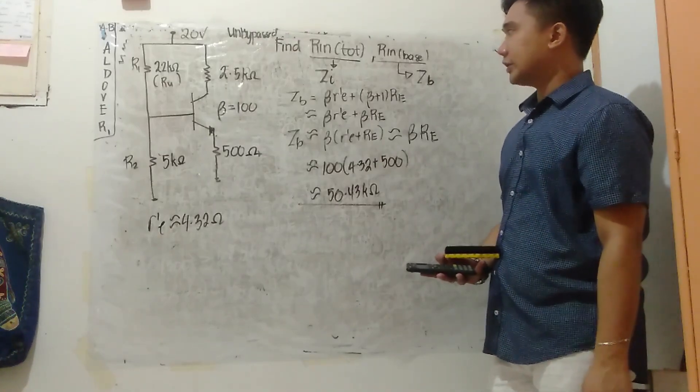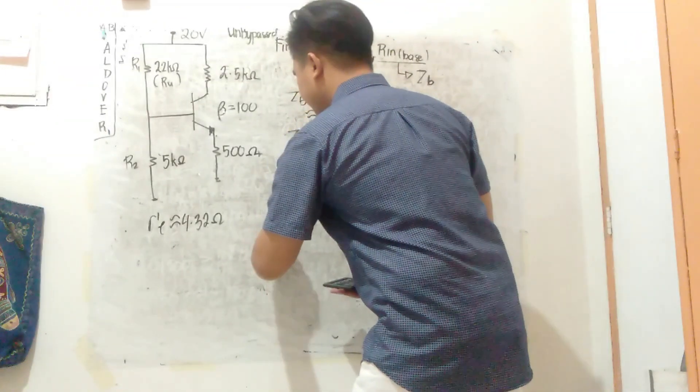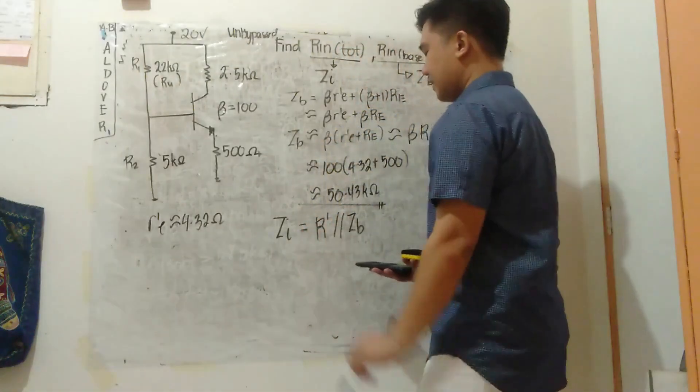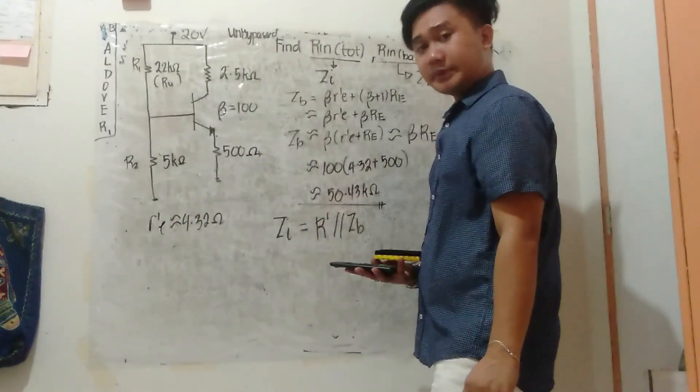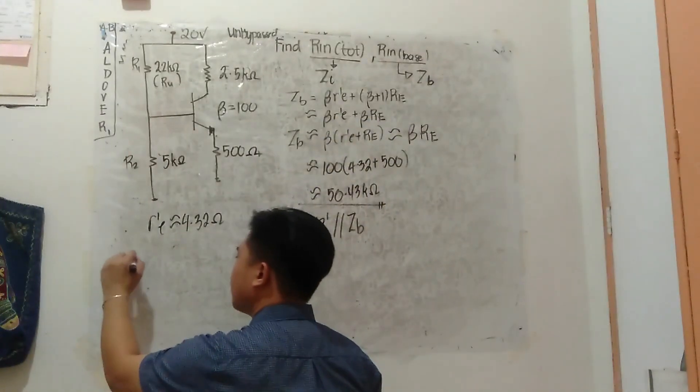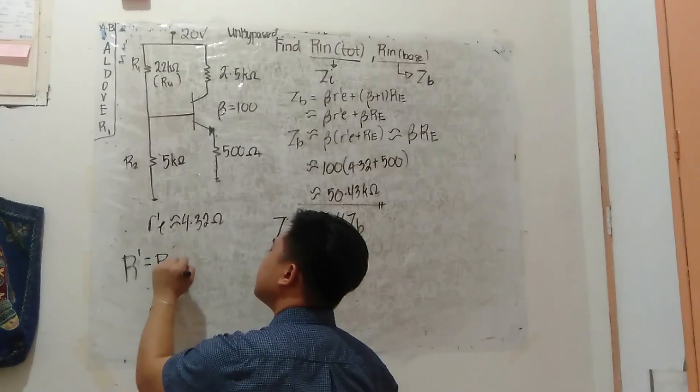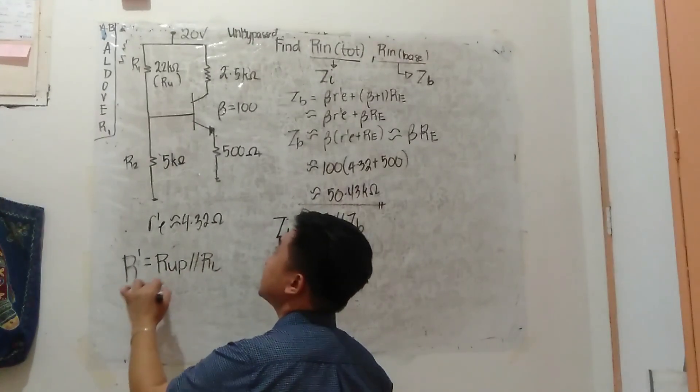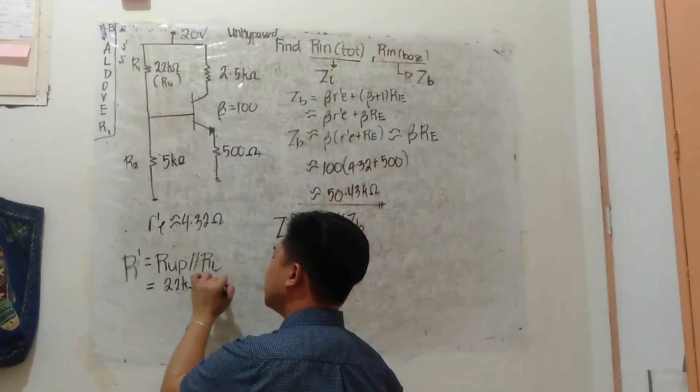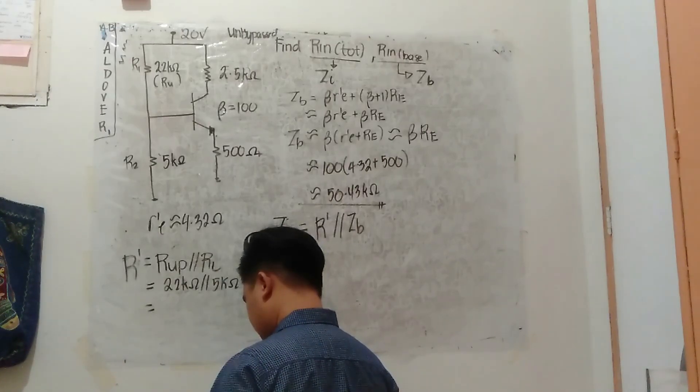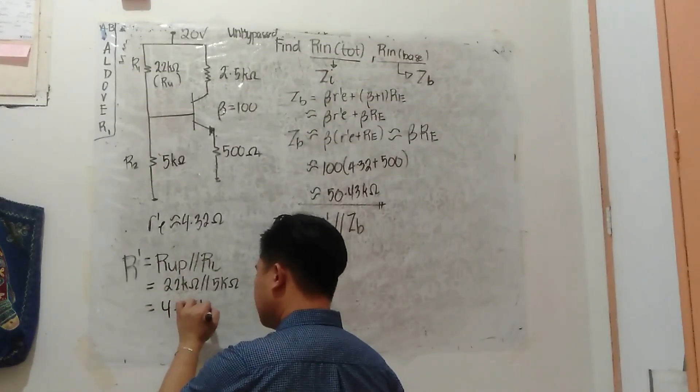Next is for the R_in total or ZI. ZI is the parallel of R prime and ZB. We already have ZB, we just need R prime. R prime is just the parallel combination of these two.